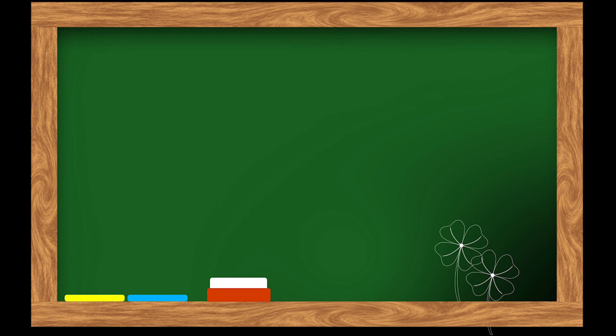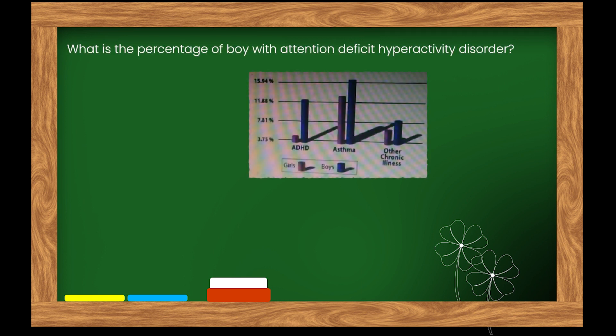Here is our next question. What is the percentage of boys with attention deficit hyperactivity disorder? Options: A. 12%. B. 16%. C. 8%. D. 4%. The right answer is option A: 12%.